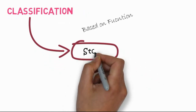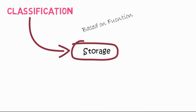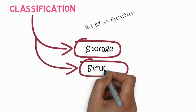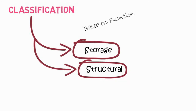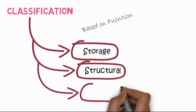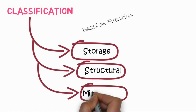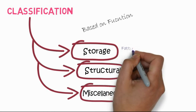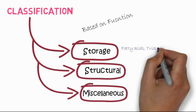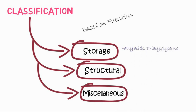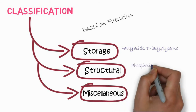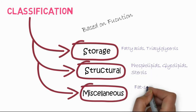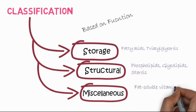The first class of lipids is called storage lipids, the second is called structural lipids, and the third is known as miscellaneous or functional lipids. Storage lipids include fatty acids and triacylglycerols, while structural lipids include phospholipids, glycolipids, and sterols.